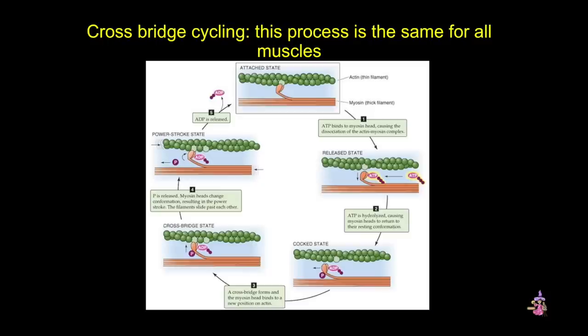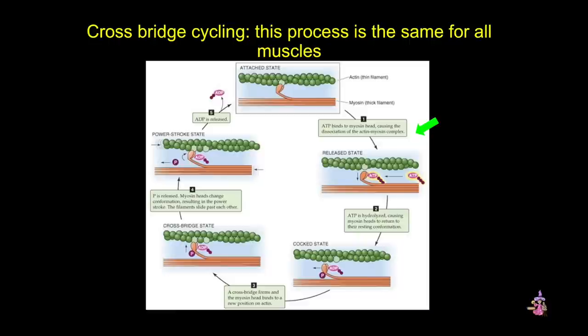This diagram goes into more detail about cross-bridge cycling — the process of myosin walking along the actin filament. Myosin functions as an ATPase and utilizes ATP to produce a molecular conformational change of the myosin itself, producing movement. Movement of the filaments over each other happens when those globular heads protruding from the myosin filaments attach and interact with the actin filaments — that's the cross-bridge state. The myosin heads tilt and drag along the actin filament a short distance — that's the power stroke. Once ATP is released, the myosin head remains attached to actin until ATP binds to the myosin head, causing a conformational change that decreases myosin's affinity for actin, and so it releases.